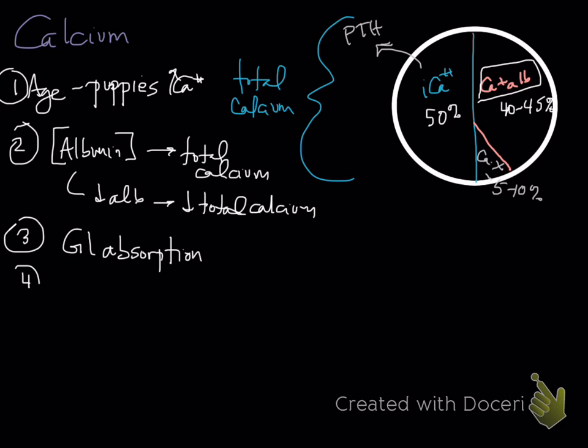The next one is bone calcium. This goes along with when we talk about the puppies. Resorption of bone calcium versus deposition of calcium is going to be influenced by PTH, vitamin D, and calcitonin. So it's not that bone itself, except for puppies, tells you what's happening with calcium or influences it. It's how the hormones are acting on bone.